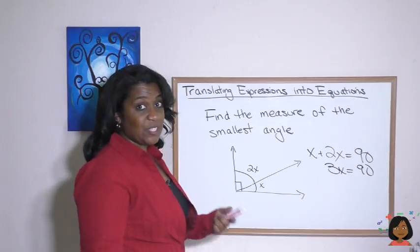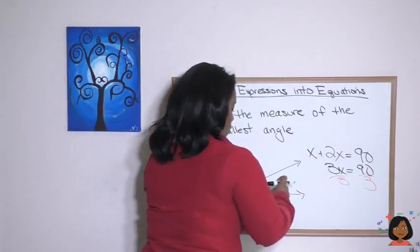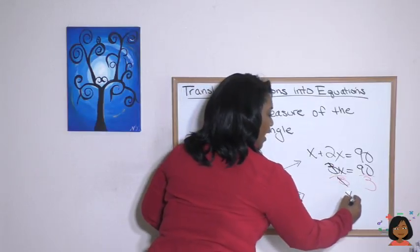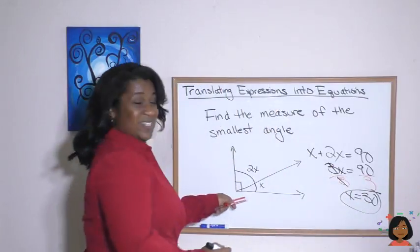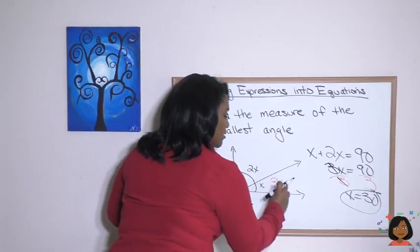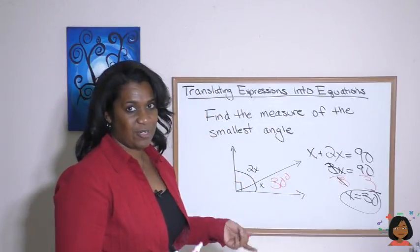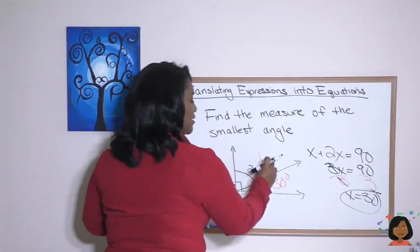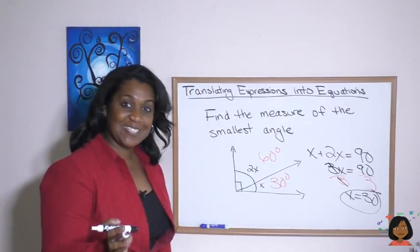And to get rid of that three, we need to divide by three on both sides. We are left with X equals 30. Now, what does that tell us? It tells us that this angle, since it's X, X is 30 degrees. But this one is twice X. So 30 times 2 is 60 degrees. And if we add those together, we see that they do equal a right angle of 90 degrees.